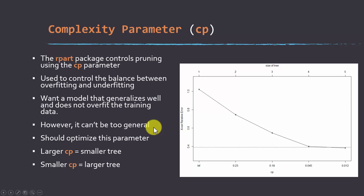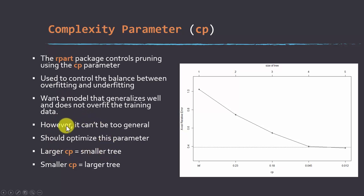One method to determine optimal pruning is the complexity parameter CP. In RPART, an R package that caret can use for decision trees, the CP parameter controls the balance between overfitting and underfitting. A larger CP means a smaller, more pruned tree; a smaller CP means a larger, less pruned tree. To find the best value, you run multiple models with different CP parameters and see which performs best — we'll talk about that optimization process later.